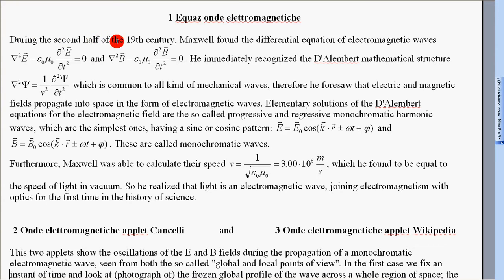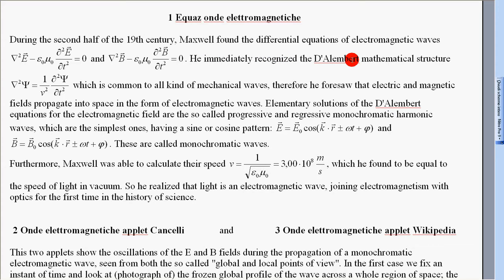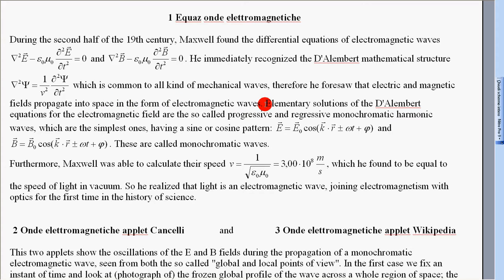During the second half of the 19th century, Maxwell found the differential equations of electromagnetic waves. He immediately recognized the d'Alembert mathematical structure, which is common to all kinds of mechanical waves. Therefore, he foresaw that electric and magnetic fields propagate into space in the form of electromagnetic waves.